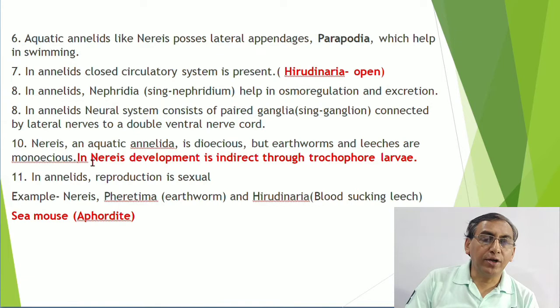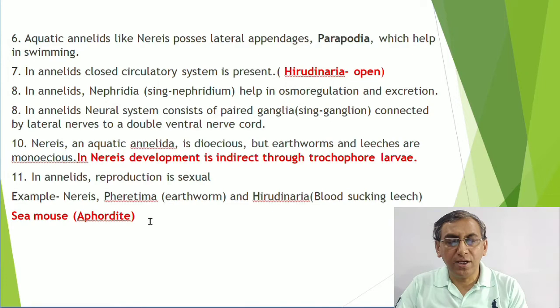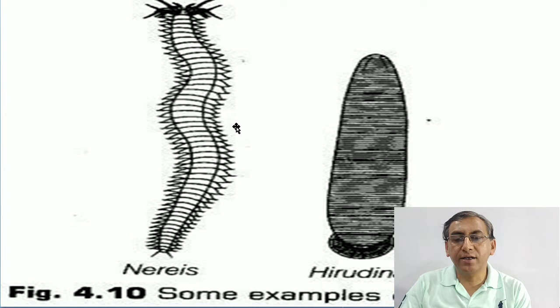The neural system of Annelida consists of paired ganglia connected by lateral nerves to a double ventral solid nerve cord. Reproduction is sexual. Examples: Nereis, Pheretima (earthworm), Hirudinaria (blood-sucking leech), and Aphrodite. Nereis and Hirudinaria are the two representative diagrams given in NCERT.